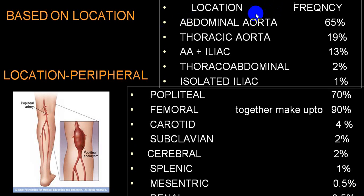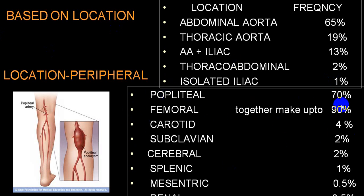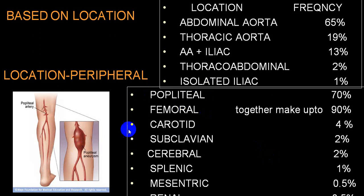Frequency-wise, abdominal aortic aneurysms are the most common — almost 65%. Second most common is thoracic aorta, then abdominal plus iliacs, then thoracoabdominal, and isolated iliac. In the peripheral variety, popliteal and femoral are most common, accounting for nearly 70% and 90% respectively. Other rare groups include carotid, subclavian, cerebrals, splenic, etc.